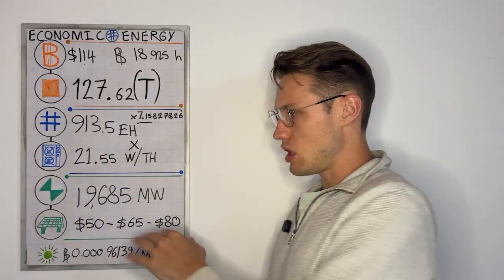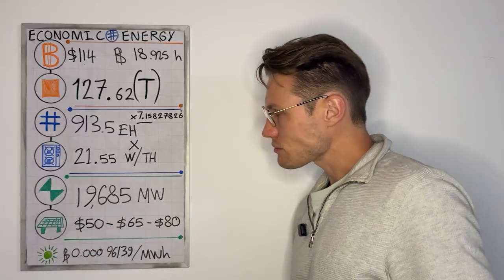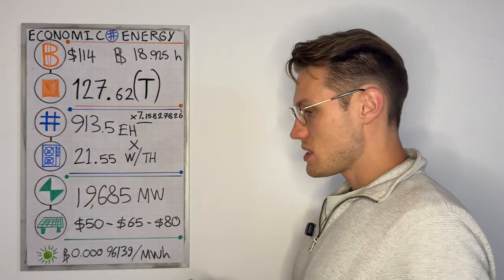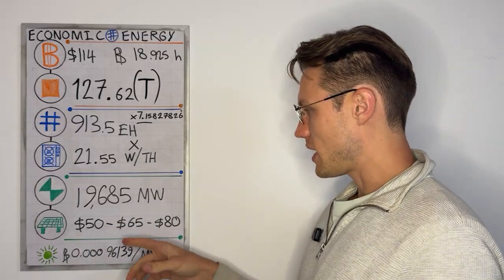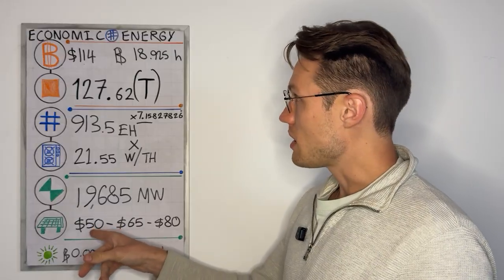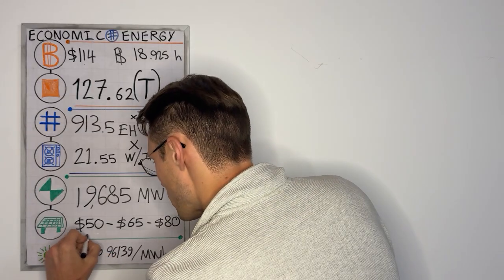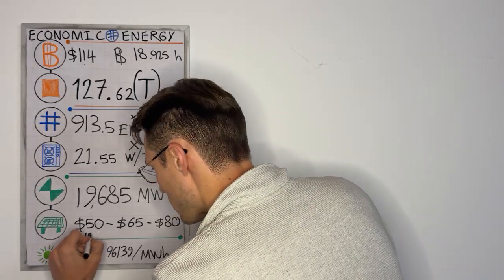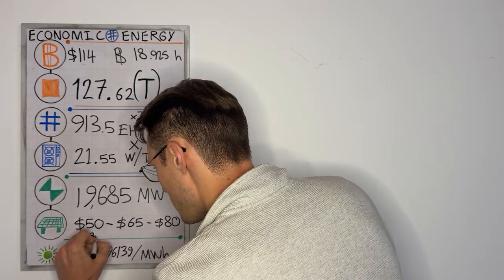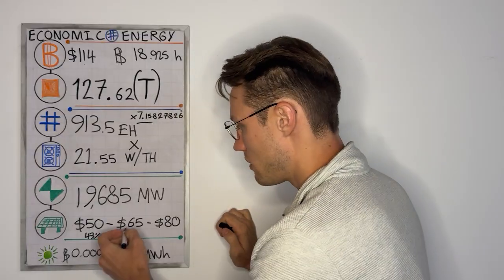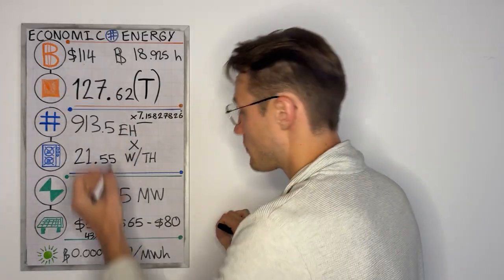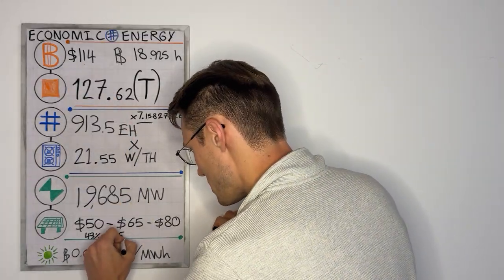But the key aspect here is you've got a quantity of Bitcoin mathematically connected to a quantity of energy. And then people start dollarizing everything. And so the interesting takeaways here are if you divide the 50 by 114, you get a production cost of about 43%, 65 divided by 114 is about 57%.